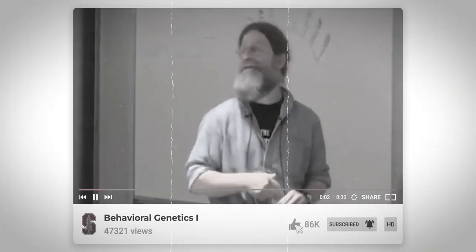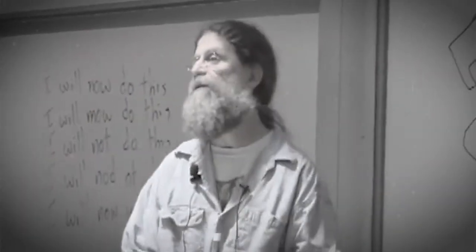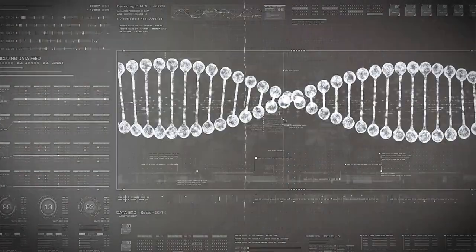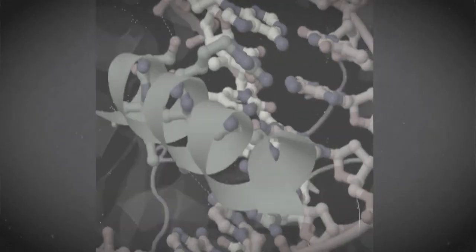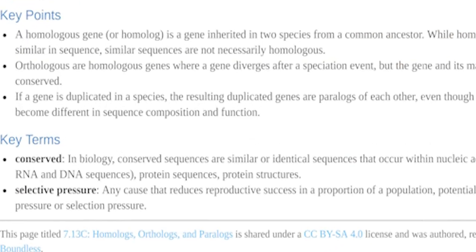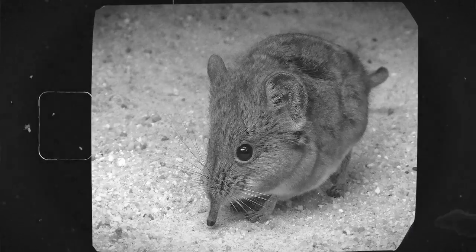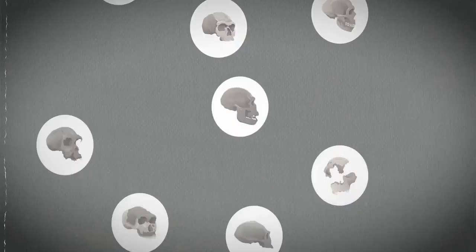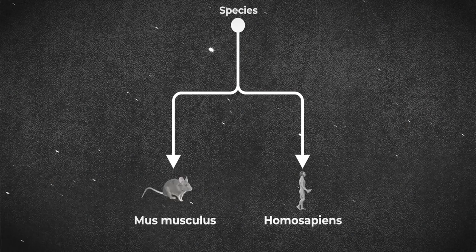Something that he talks about in one of his many lectures is this gene called the FOXP2 gene. You don't have to be a geneticist or someone heavily invested in science to understand this, but FOXP2 is quite interesting because it's what's called a gene homolog — basically a gene that is shared by two or more species from a common ancestor. In this case, we're talking about very old ancestors, because the two species we're interested in are us, Homo sapiens, and the house mouse, Mus musculus.